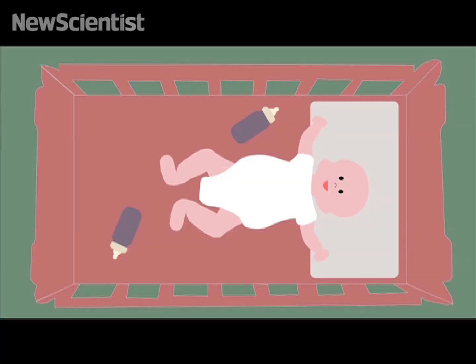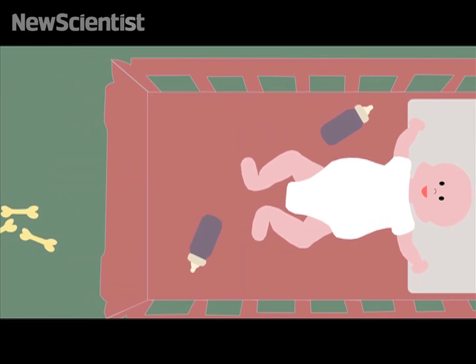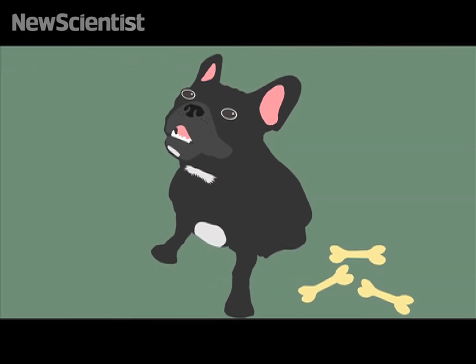When an infant gazes into her mother's eyes, the levels of a hormone known as oxytocin spike in the mother's brain, strengthening the emotional bond that mother feels for her child. Studies have also shown that petting a dog or gazing deeply into a dog's eyes can trigger an increase of oxytocin in the human brain as well.